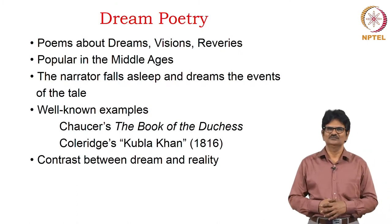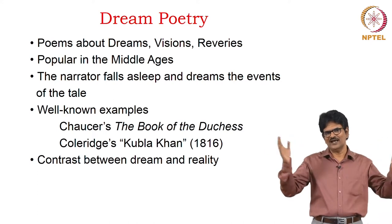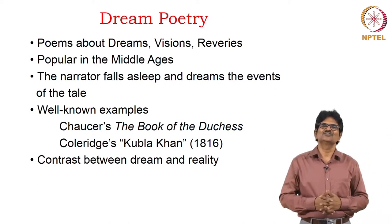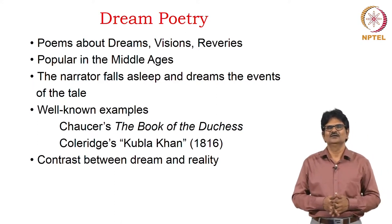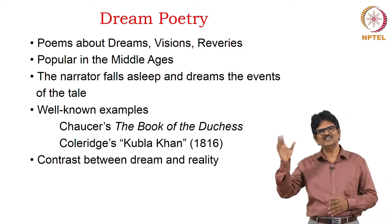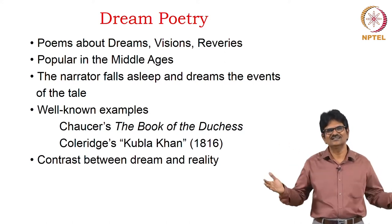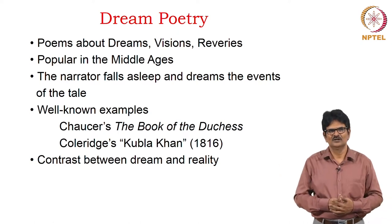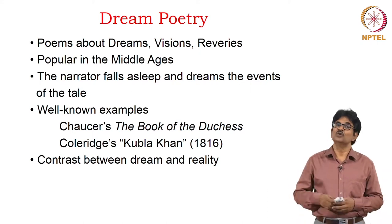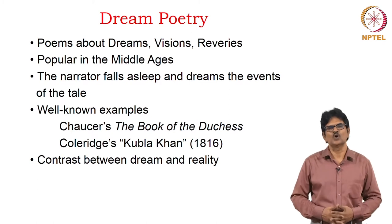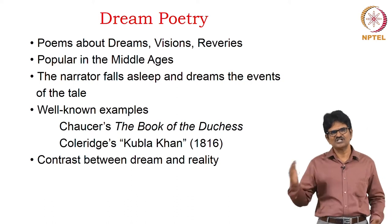Next, we have dream poetry. This dream poetry is all about having a dream, visions, reveries, and then the narrator telling the story. This form of poetry was very popular in the Middle Ages. The narrator falls asleep and dreams the events of the tale and then starts telling the tale. This is actually a frame for which another tale or many other tales may be told. Well-known examples include Chaucer's The Book of the Touches and Coleridge's Kubla Khan. In this poem, we have a contrast between dream and reality.